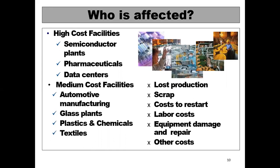High-cost facilities — such as semiconductor plants, pharmaceutical industries, and data centers — are affected by power quality issues. When a power quality issue arises, the characteristics of semiconductors change and operations become mismatched.